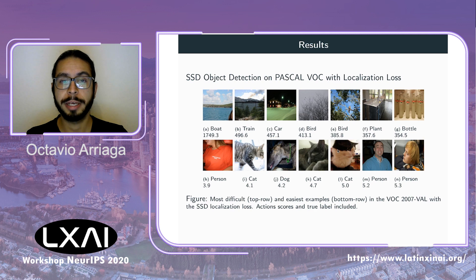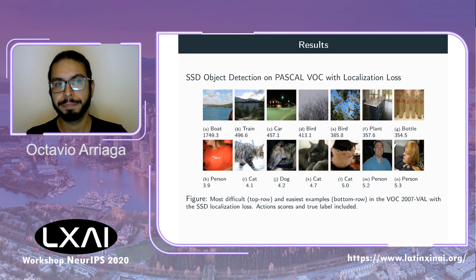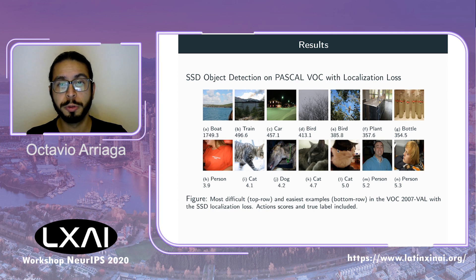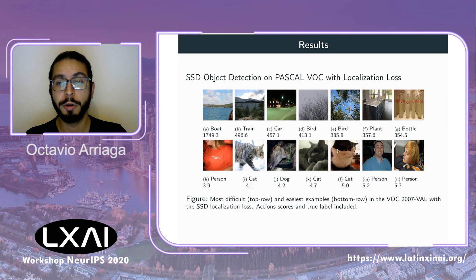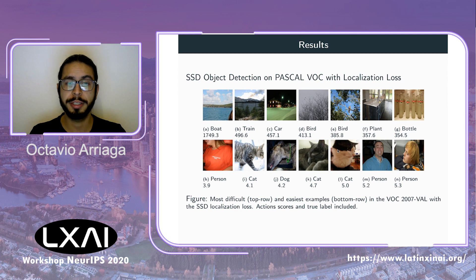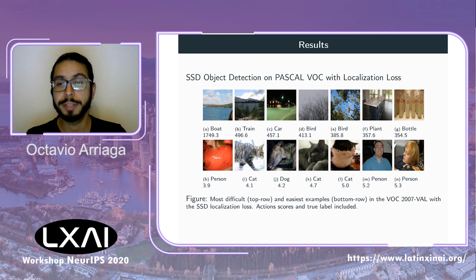The top row shows samples with the highest action scores and the bottom row shows easy examples, here for the localization loss. The hardest images to regress the localization loss are those with very small objects located in the background, or images containing many bounding boxes such as those with bottles. The easiest samples are those where the object is centered and there is only a single object.